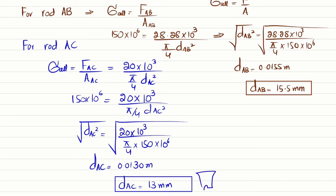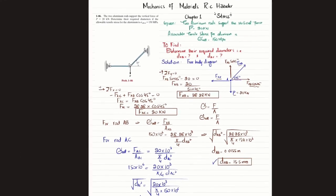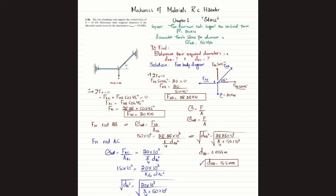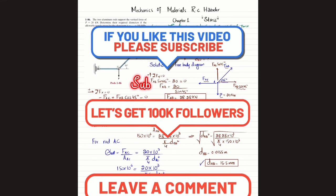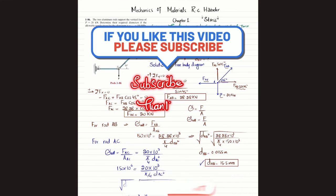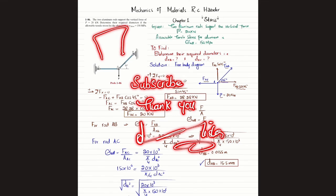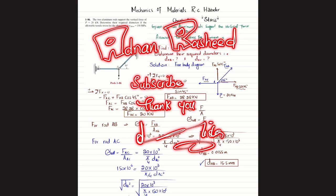The answers are: diameter of rod AB is 15.5 millimeters and diameter of rod AC is 13 millimeters for the given 20 kilonewton load. That was all about problem 1-86. I hope you enjoyed this video and learned from it. Those new to my channel, please subscribe and press the bell icon for notifications. Share my videos with your friends, and ask any questions in the comment section.